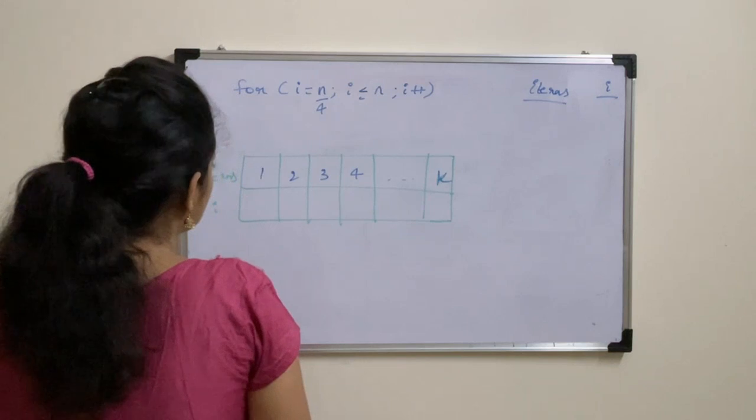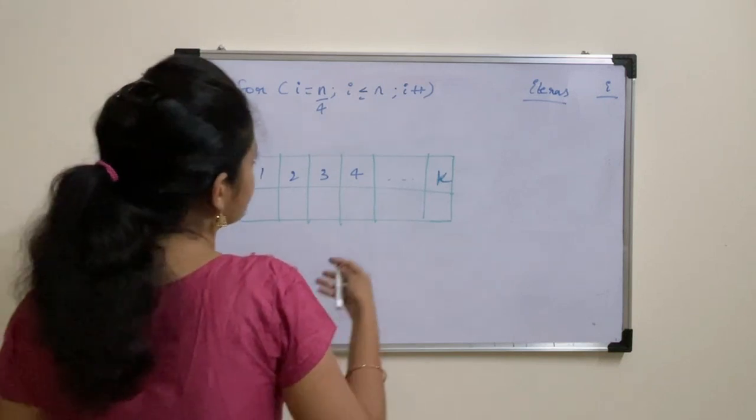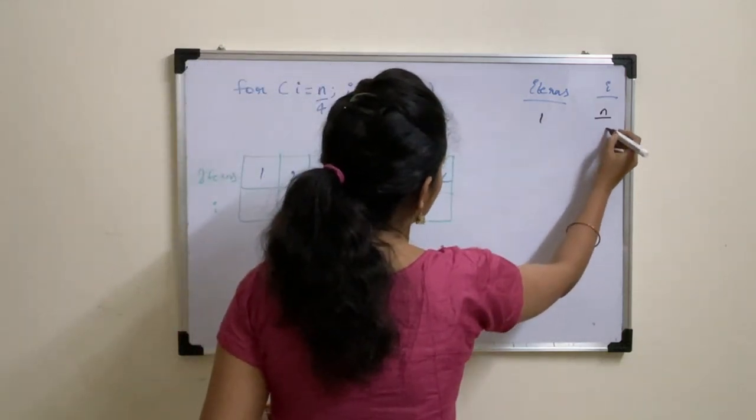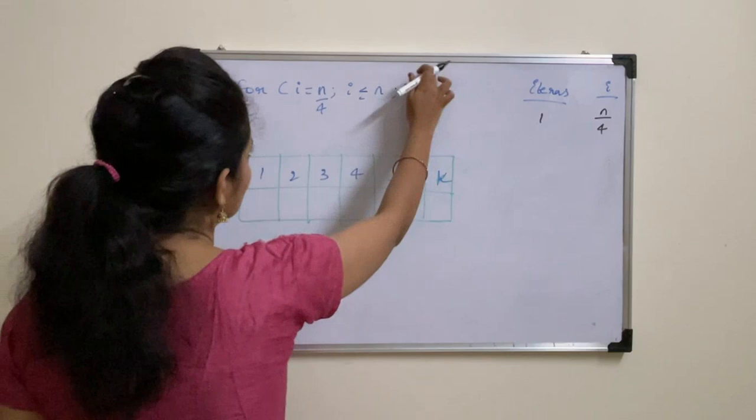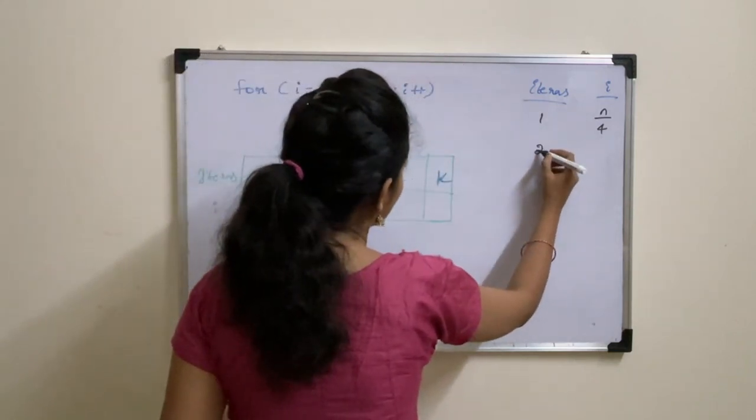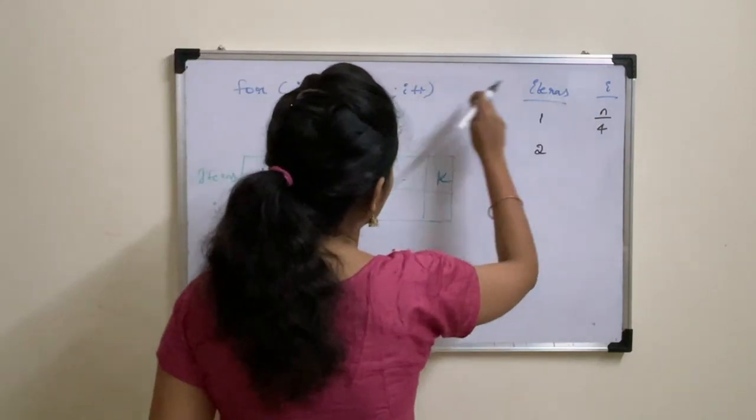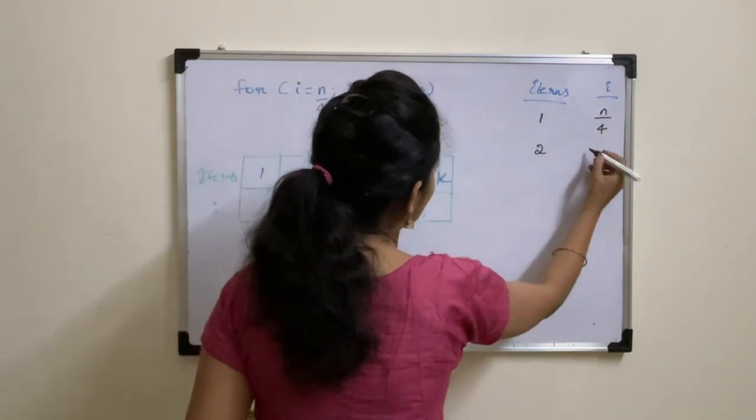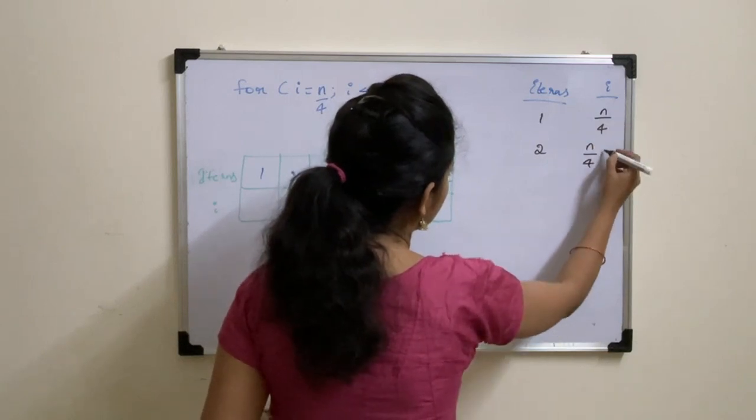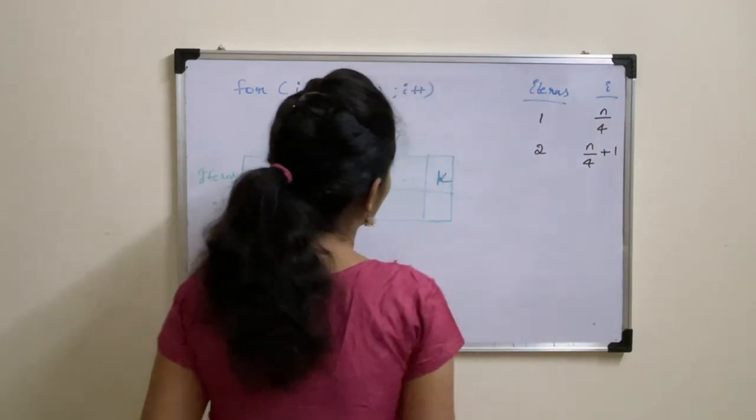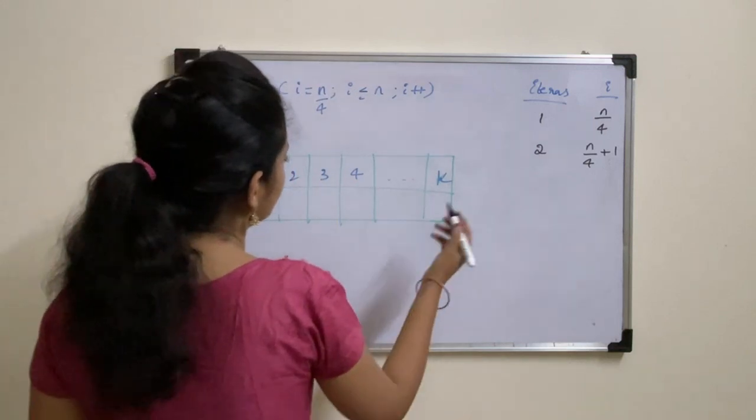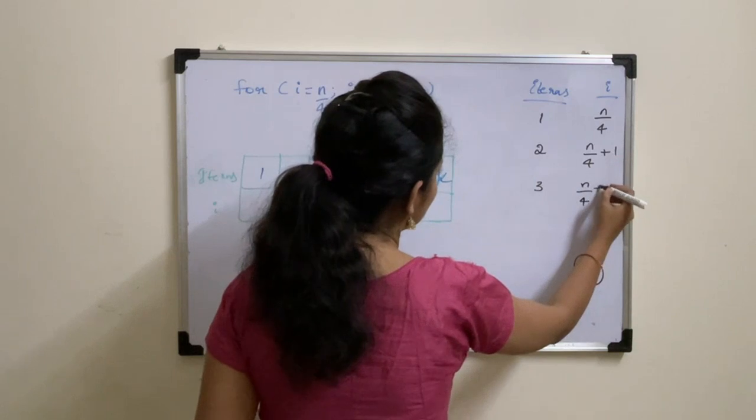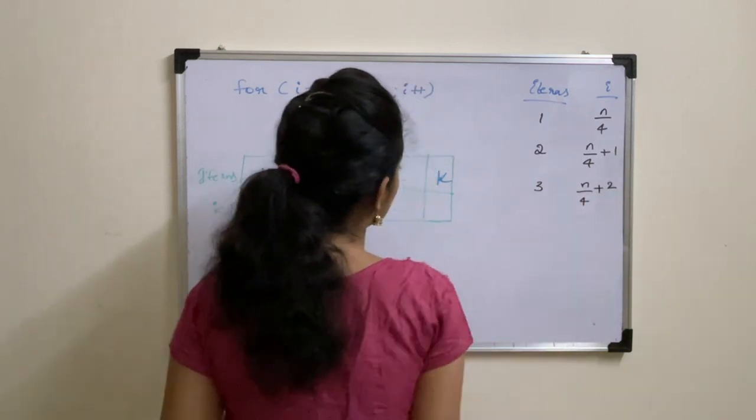So for the first iteration, what is value of i? Value of i is initialized to N by 4, so it will be N by 4. i is incremented by 1 and during second iteration, you need to add 1 to the previous i value. So previous i is N by 4 and incremented by 1. During third iteration, it will be N by 4 plus 2.